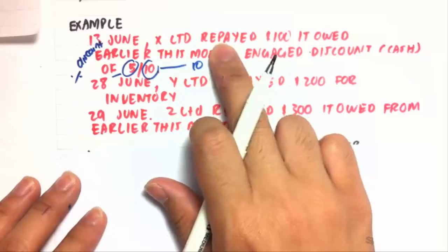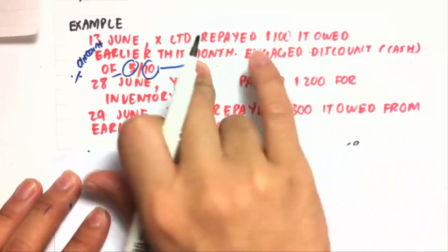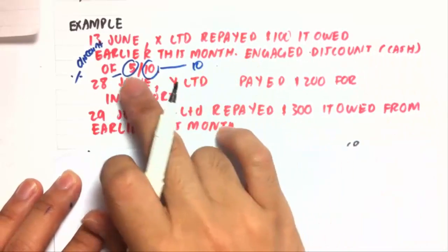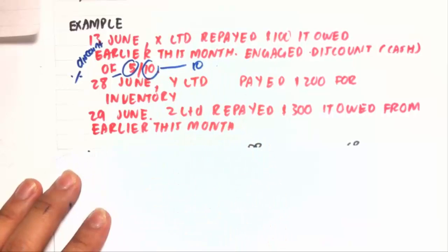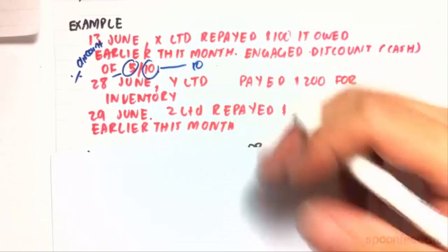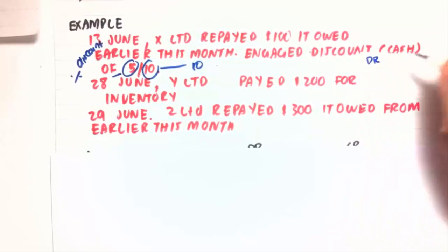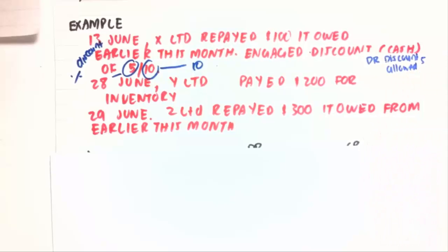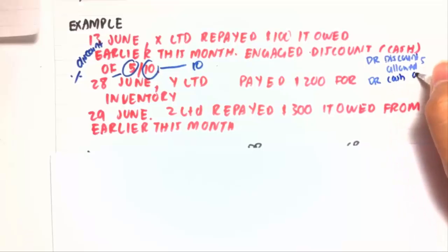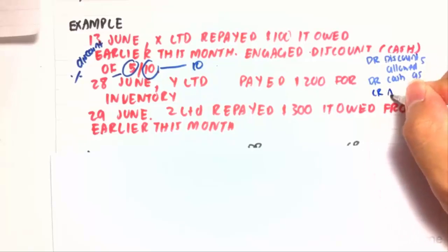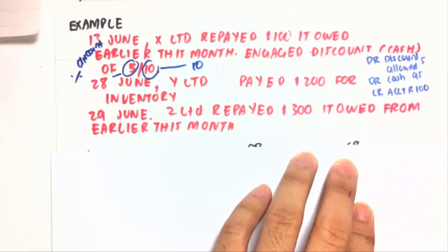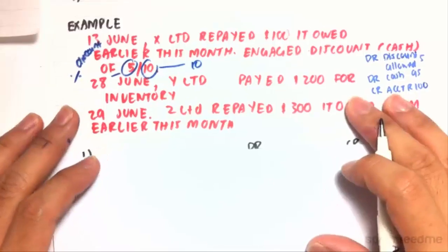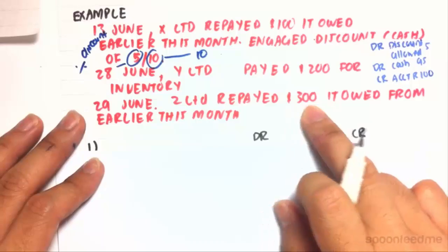Here are our three example transactions. On the 13th of June, XLTD repaid $100 it owed from earlier this month — they bought inventory on credit on the 8th of June. They engaged a cash discount of 5/10, meaning they receive a 5% discount if they paid within 10 days. On the 28th of June, YLTD paid $200 for inventory — that's a cash sale. And on the 29th of June, ZLTD repaid $300 of cash it owed from earlier this month.